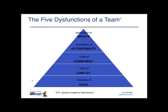The fifth and final dysfunction is inattention to results. In a team with an absence of trust, fear of conflict, lack of commitment, and avoidance of accountability, you will not pay attention to producing what you're supposed to produce. This is often the classic tip of the iceberg — when a team seems not to care about results, it's usually a very clear indicator that there are four dysfunctions underneath driving that behavior.